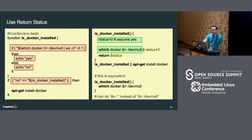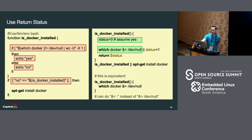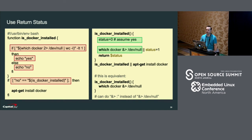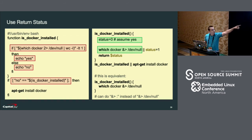In this bad example, the function attempts to report failure using the standard output — this is verbose and error prone. Instead, you should report Boolean results using the function status code. In the function on the right, that status code is returned to indicate if Docker is installed. Also in bash, a function will return the status of the last command that it ran, so we can simplify all of this block with just 'which docker > /dev/null', and that's going to have the same result.